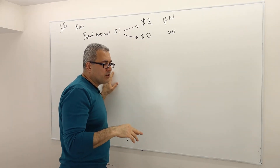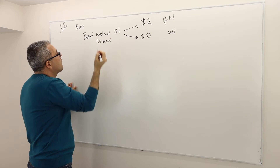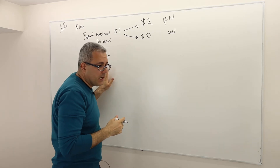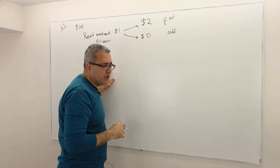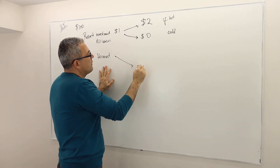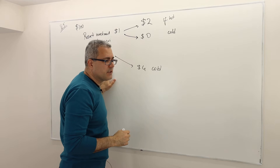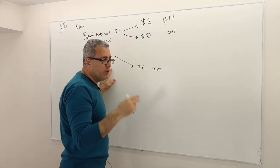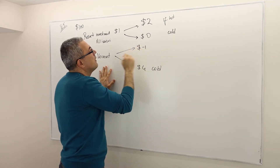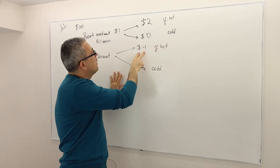He can also buy shares of a ski resort at Vermont. It's all about skiing. That resort pays for each dollar invested $4 if the year is cold, and minus $1 — meaning you lose — if the year is hot, because there won't be enough snow.